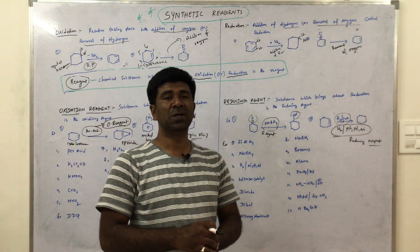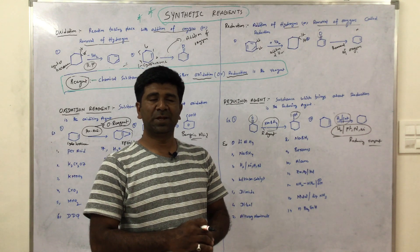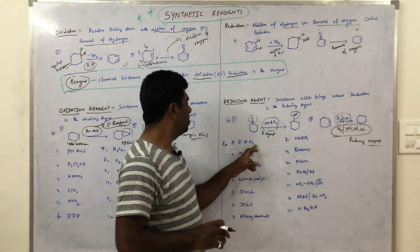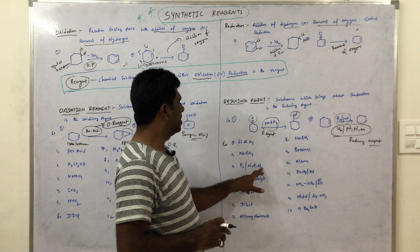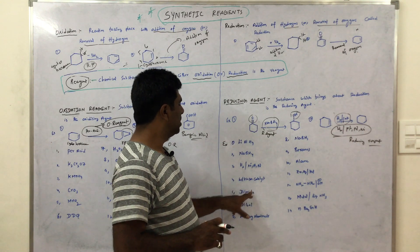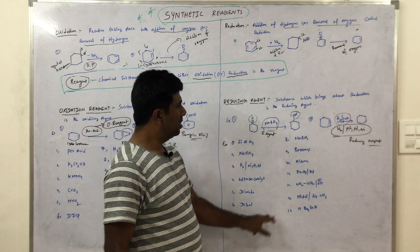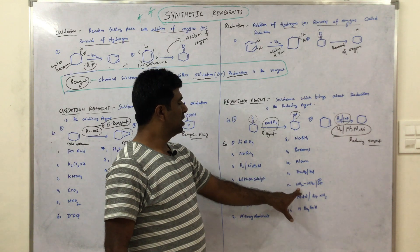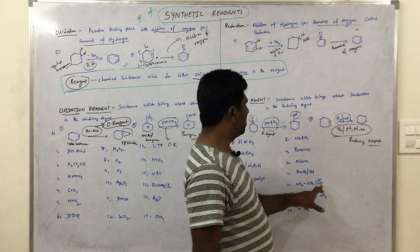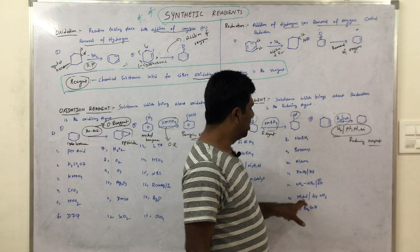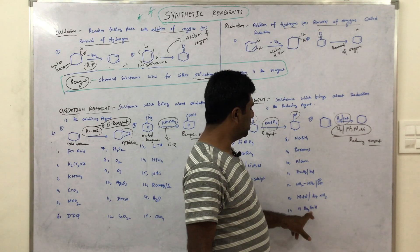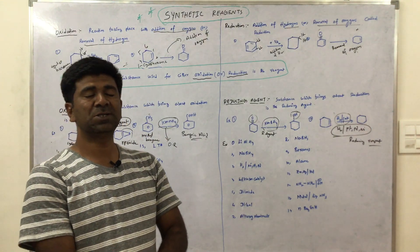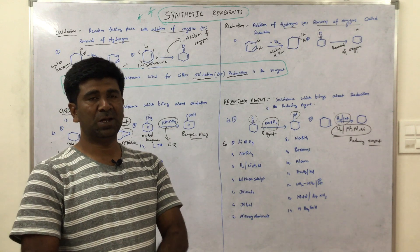Reducing agents include: lithium aluminum hydride, sodium borohydride, hydrogen in the presence of nickel, platinum, or palladium, Wilkinson's catalyst, diimide, diborane, alkoxyaluminates, NaBH₃CN, boranes, alane, zinc/Hg with HCl, Ziegler-Natta catalyst, NH₂⁻ in the presence of OH⁻ and metal, and tributyltin hydride (Bu₃SnH) in the presence of liquid ammonia. These are also categorized as strong, mild, and weak reducing agents depending on the reaction conditions.